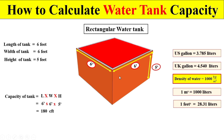If we calculate the total capacity in terms of UK gallons, we multiply 180 cubic feet by 28.31 liters and then divide by 4.540 liters to get the total capacity in UK gallons.